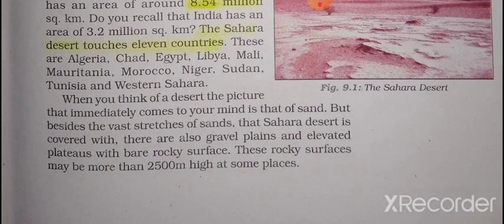The entire Sahara desert is not the same or plain. There are some rocky places and some high elevated areas — some places are at 2,500 meters high. So the terrain across the Sahara desert varies considerably.